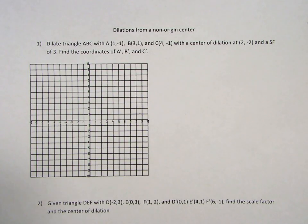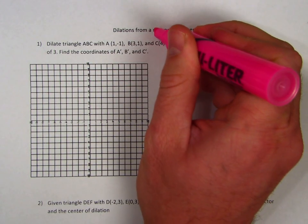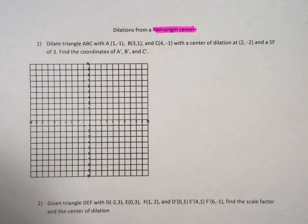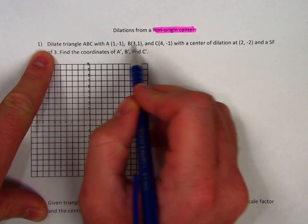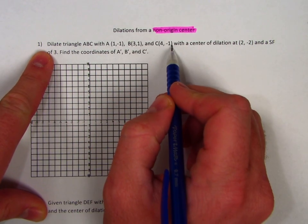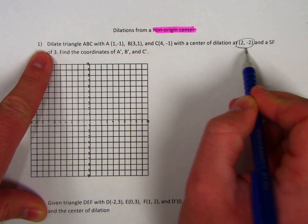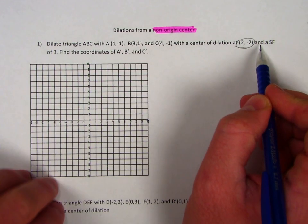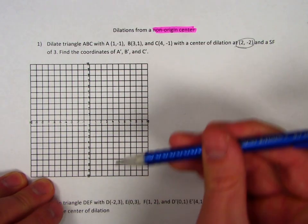Here's my second video on dilations, and this time we're going to dilate from a center that is not the origin. We're going to find some other point on the graph and dilate from there. In example one, we're dilating triangle ABC with given vertices and a center of dilation that is not at the origin. The scale factor is three and we want to find the coordinates of the image.